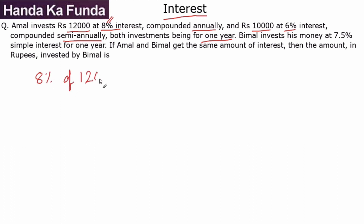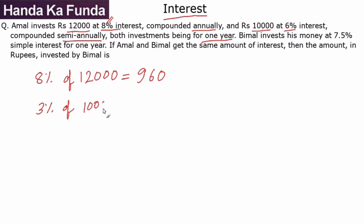He will get 8% of 12,000, which is 960 — since 1% is 120, and 120 into 8 is 960. For the 10,000 rupees at 6% semi-annually, that is equivalent to getting 3% every six months. So in the first six months he gets 3% of 10,000, which is 300 rupees.